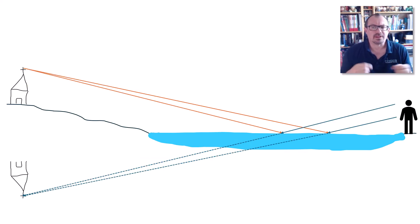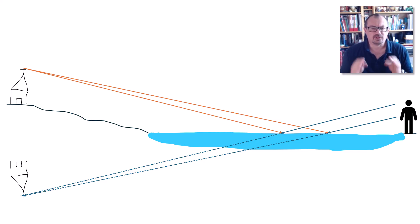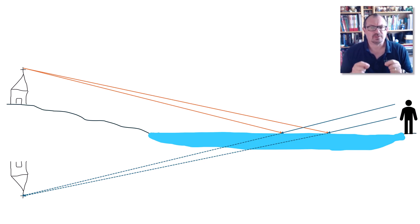Now if we're going to draw this properly, let's take two light rays from the top of the church, look at how they reflect, and we can trace them back. So to the observer it looks as though the rays are coming from a point somewhere below the surface of the lake.